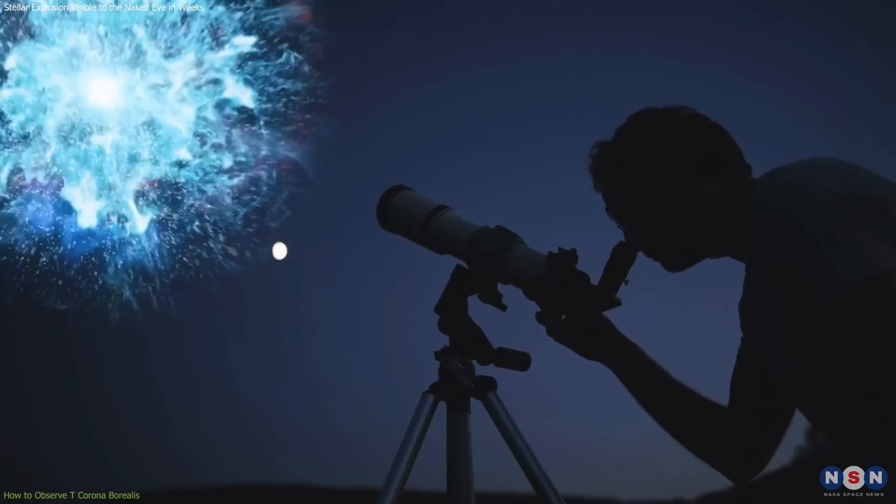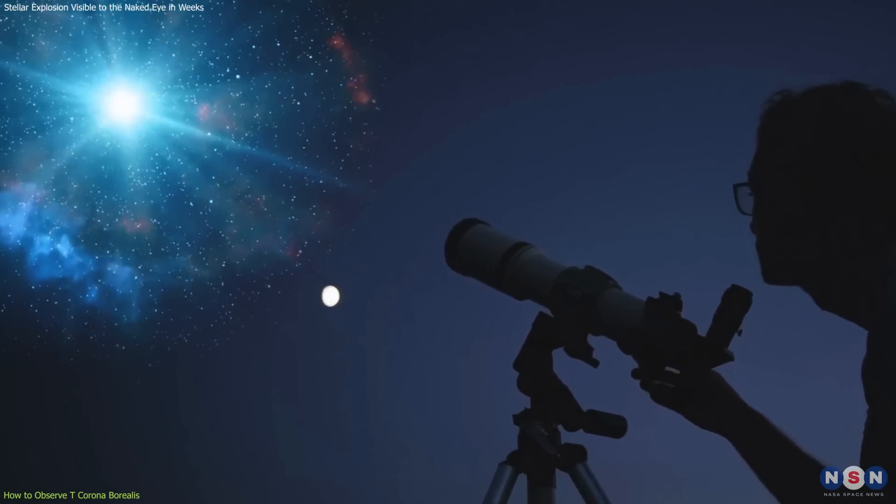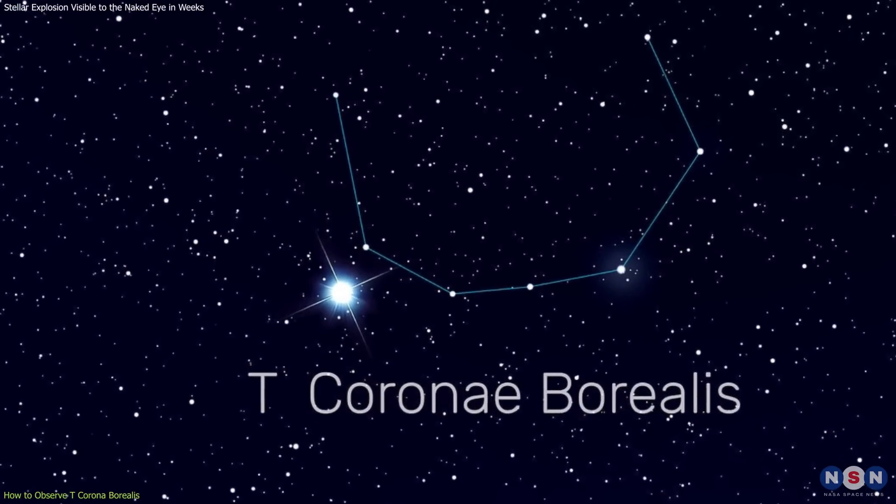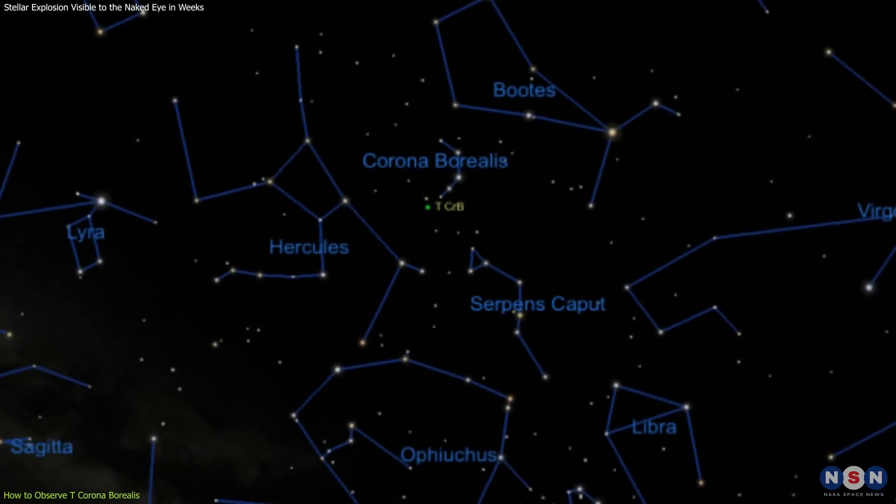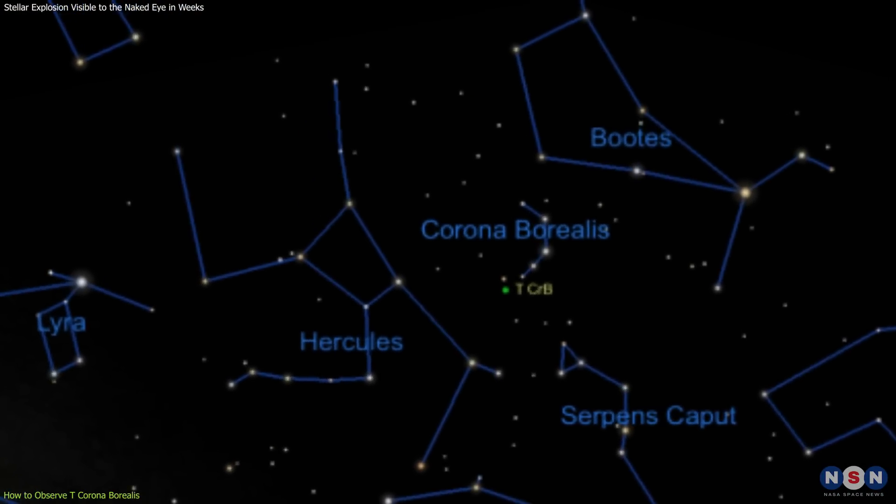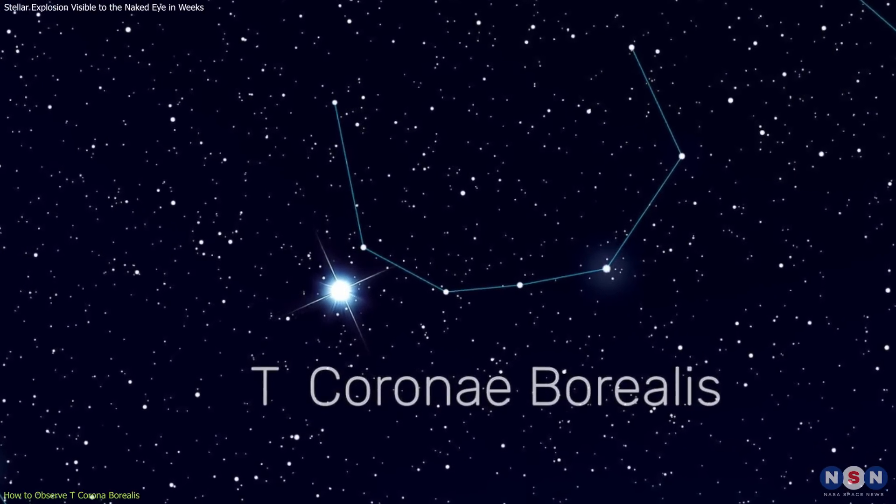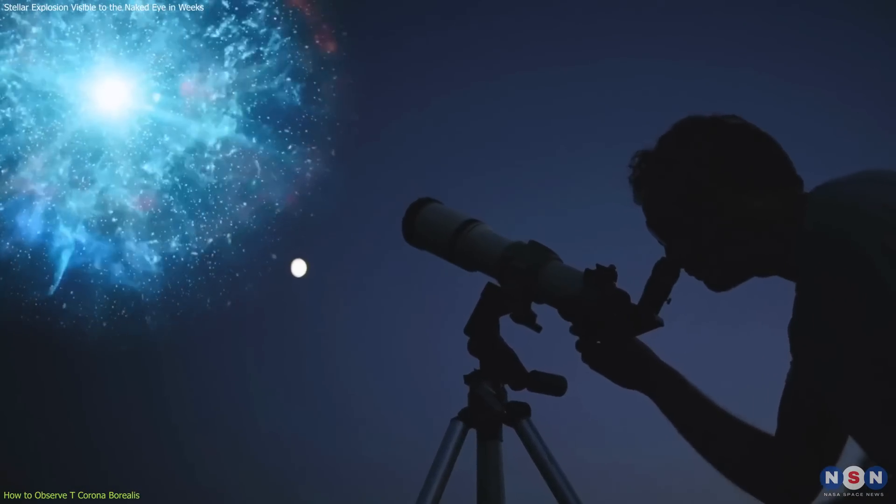Observing this outburst is a unique and rewarding experience that requires some preparation. Corona Borealis is a relatively quiet part of the sky, making it easier to spot TCRB. Using a smartphone app, locate the constellation between Vega in Lyra and Arcturus in Boots. The constellation resembles a semicircle, with TCRB positioned just outside this pattern. Familiarizing yourself with this part of the sky is essential for spotting this nova when it brightens.